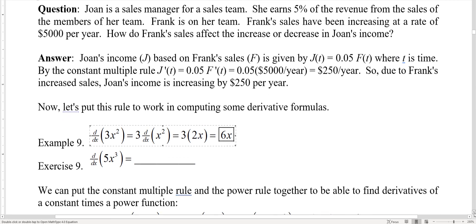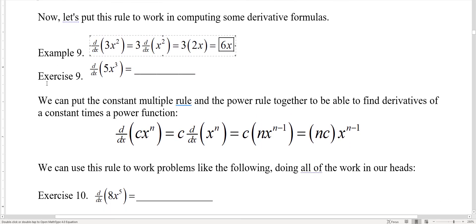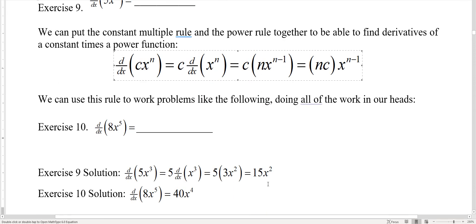Well hopefully you already got that - it is 15x². Now we can actually combine the constant multiple rule and the power rule together to be able to find derivatives of a constant times a power function like this: the derivative of cx^n is c times the derivative of x^n, which is nx^(n-1). So this is just n times c, or c times n, times x^(n-1). So you could do that directly. For example, see if you can apply that directly here. So for this first one, did you get 15x²? And for the second one, did you get 40x^4?